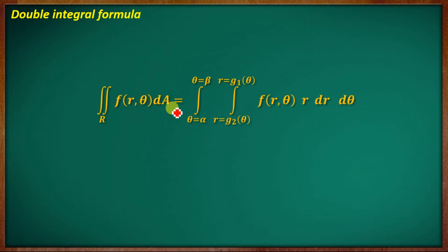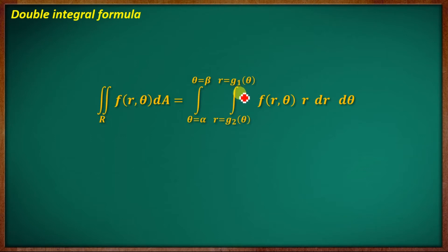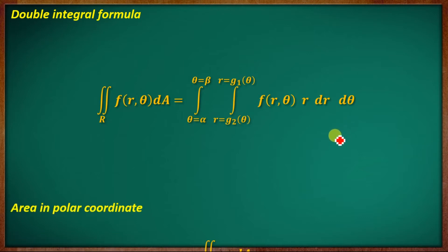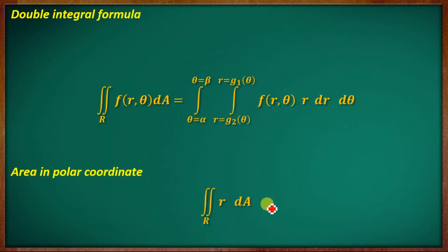The double integral formula in polar coordinates is: the area dA equals the double integral, with θ from α to β and r from g₁(θ) to g₂(θ), of f(r, θ) · r dr dθ. The extra factor r comes from the polar area element r dA.